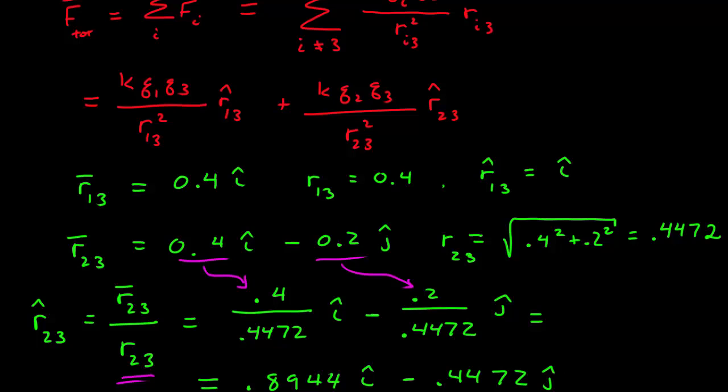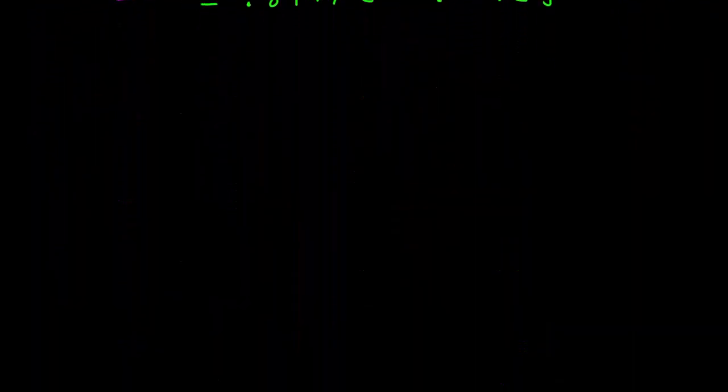I have the full form of Coulomb's Law for both charges. I found the vector from each charge that exerts a force on 3, calculated the magnitude of each of those, then calculated the unit vector of each of those. Now I can substitute all of that back in. To simplify my algebra, I'm going to factor out a K and a Q3 from both of those terms.